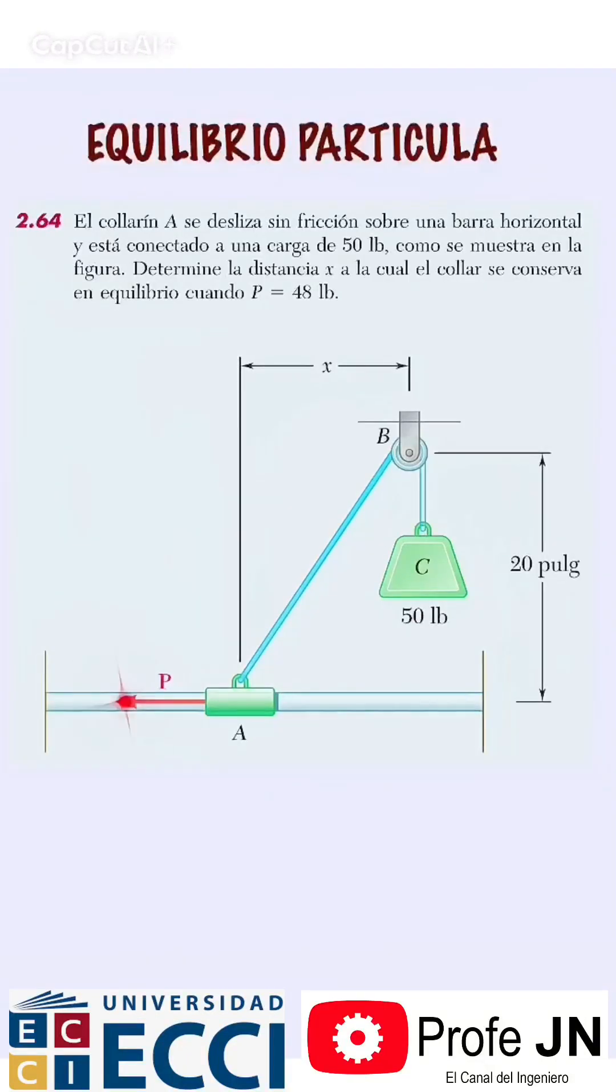Looking at the setup, my collar slides on this horizontal bar without friction and supports this 50-pound weight. The question: if the load P is 48 pounds applied on the collar, then what horizontal distance should exist between the weight and the collar for this to be in equilibrium?